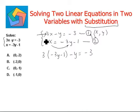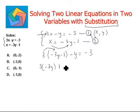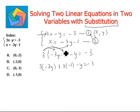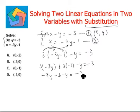Let's solve this. We'll apply the distributive property: 3 times negative 3y, plus 3 times negative 1, minus y equals negative 3. So we have distributed 3 among both quantities inside the parentheses. 3 times negative 3y is negative 9y. 3 times negative 1 is negative 3. Minus y equals negative 3. So we'll combine the like terms, which are negative 9y and negative y, giving negative 10y.